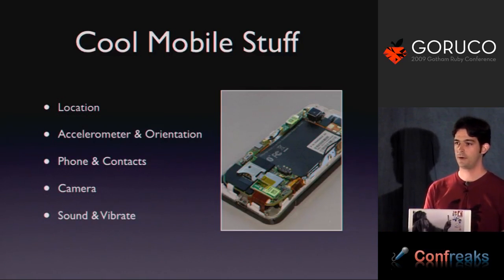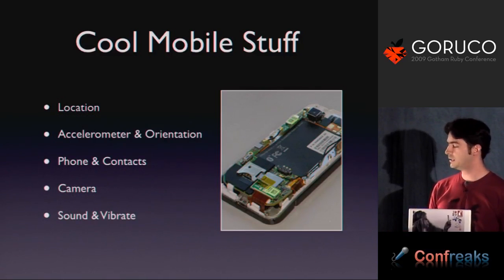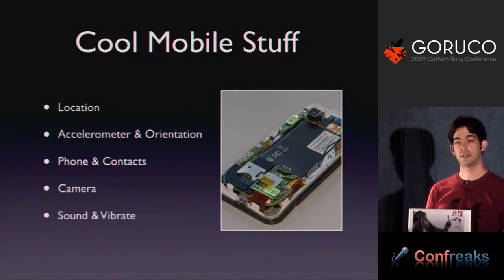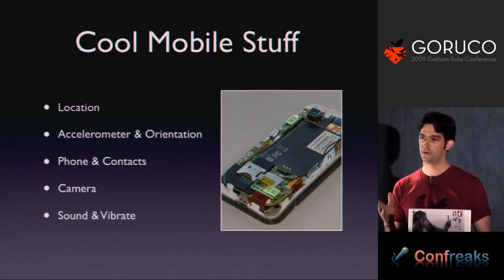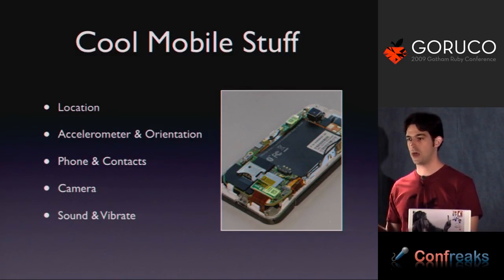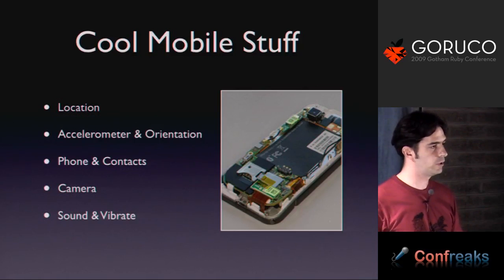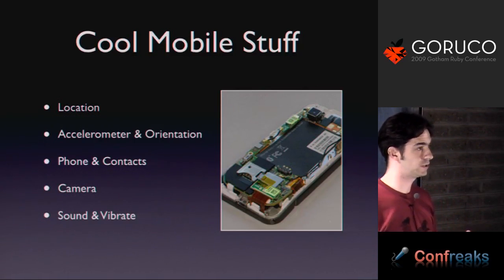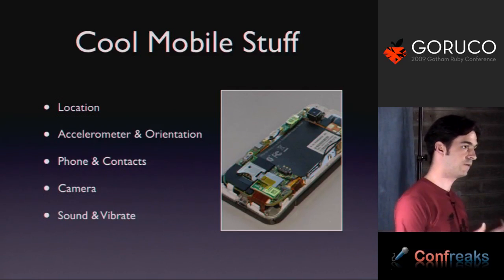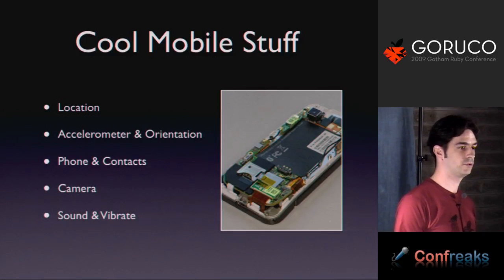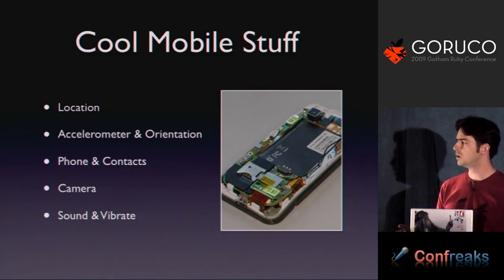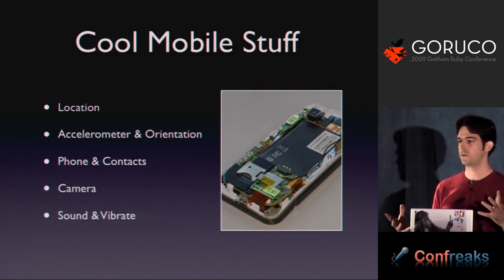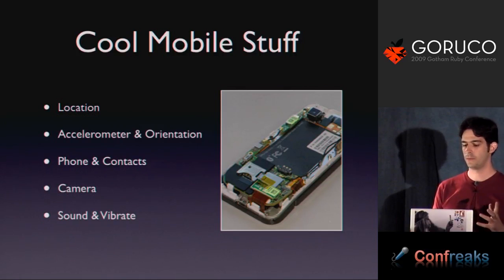Almost every phone has a camera, so you have the ability to do multimedia. Sound and vibrate is much more than a gimmick — it really means you can push notifications to users. Whether you have a background process polling or doing something, they get a buzz in their pocket. Or in the iPhone case, you have a push server — you can interrupt the user whatever they're doing and send a notification. This is a really big list of new stuff we were never able to do in the web world.